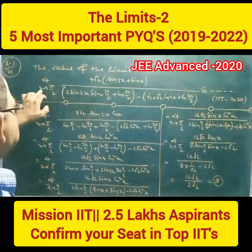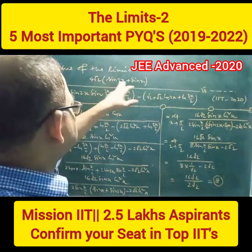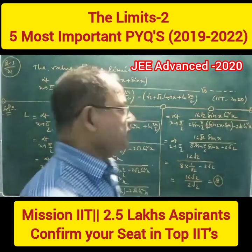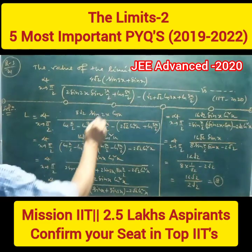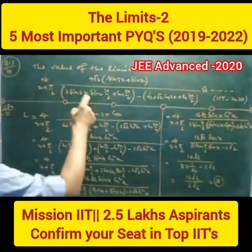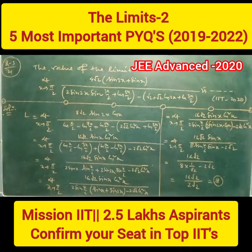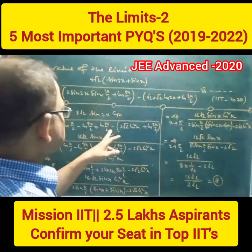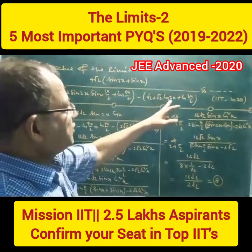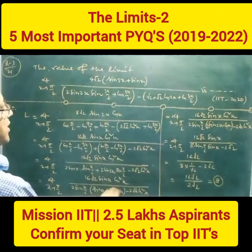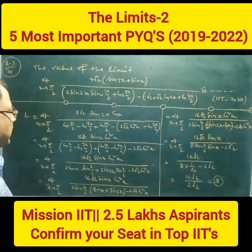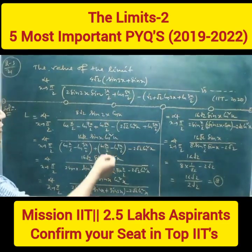Now the value of the limit — limit x tends to pi by 2 — for root 2 sine(3x) plus sine(x) by this — is IIT 2020 ka question. Clear: limit x tends to pi by 2. Apply sin C plus sin D formula: 2 sine A sine B = cos(A minus B) minus cos(A plus B). And so this is cos(5x/2). From both terms take out root 2, so this is 1 plus cos(2x) = 2 cos square x, so like this. Arrange the two parts together.